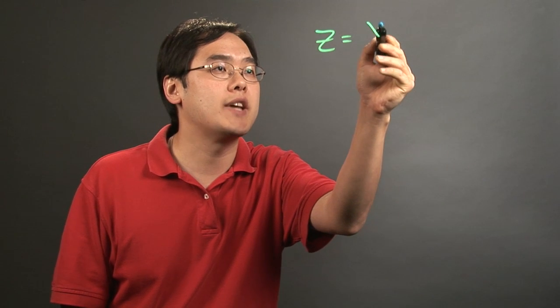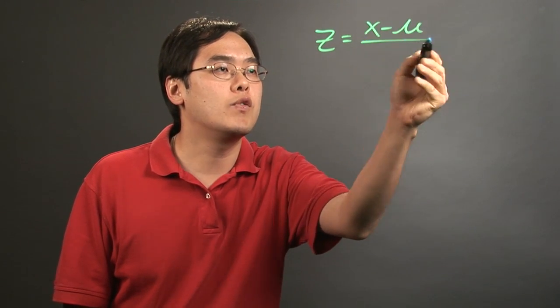For example, if you have a normal distribution, it all starts with the z-score formula, where z equals the data point minus the mean over the standard deviation.